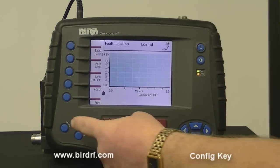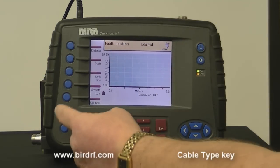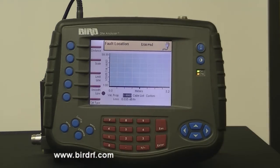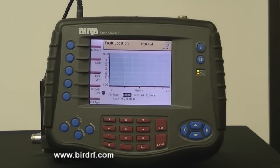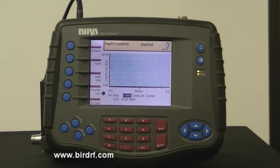Then you want to go into the config menu and select cable type. We already have a velocity set down here along with a cable loss.